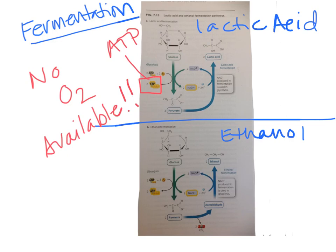Ethanol fermenters process things a little differently. Glycolysis is exactly the same — we end up with two pyruvates and have made our two extra ATPs and our NADH. In this case, enzymes process pyruvate first to an intermediate called acetaldehyde, releasing two CO2s — one carbon off of each pyruvate, two carbons total.